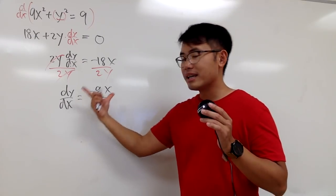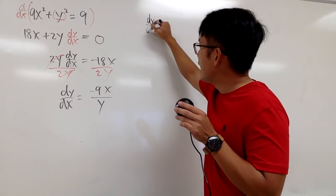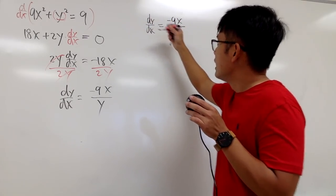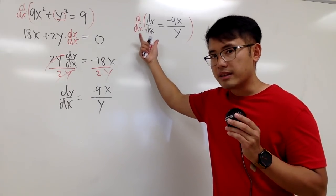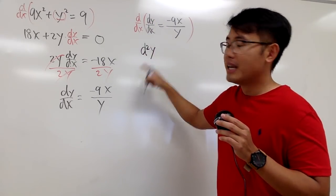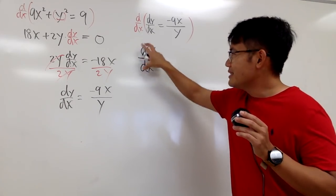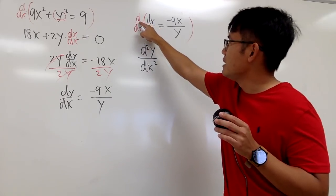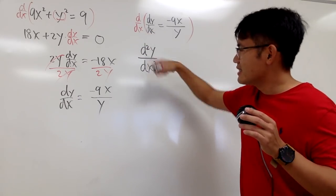To get the second derivative, we differentiate dy/dx again. We already know dy/dx equals negative 9x over y, and we apply d/dx to that. Notation-wise, you have d and dy on top, so people write d²y, and on the bottom dx·dx becomes dx². This is the standard notation for the second derivative.